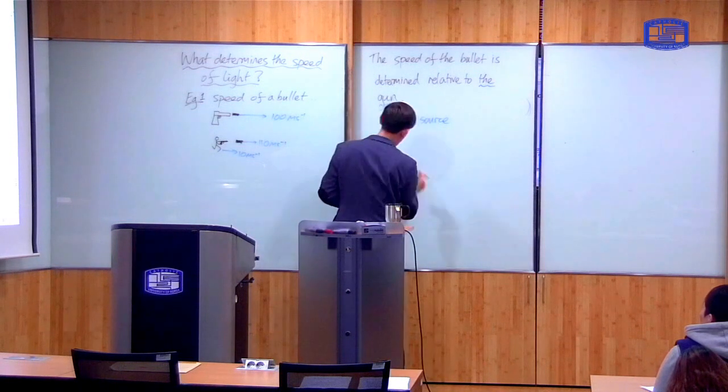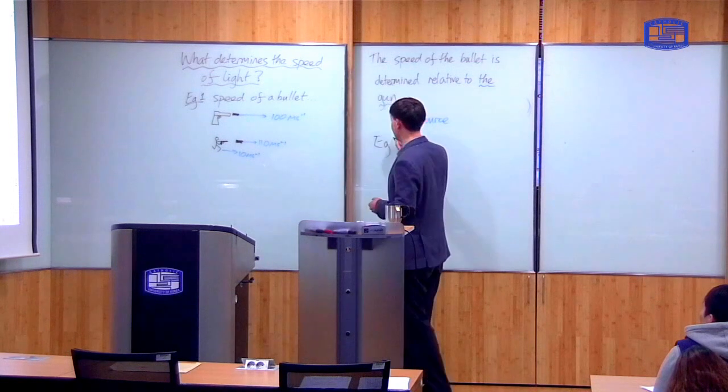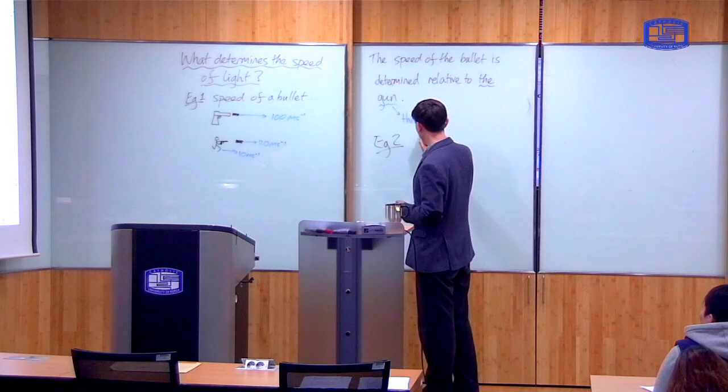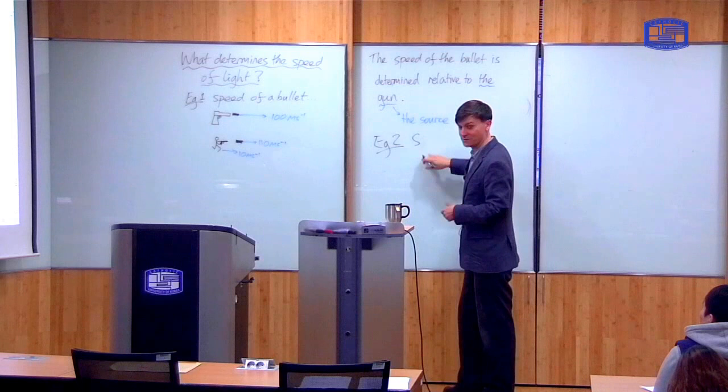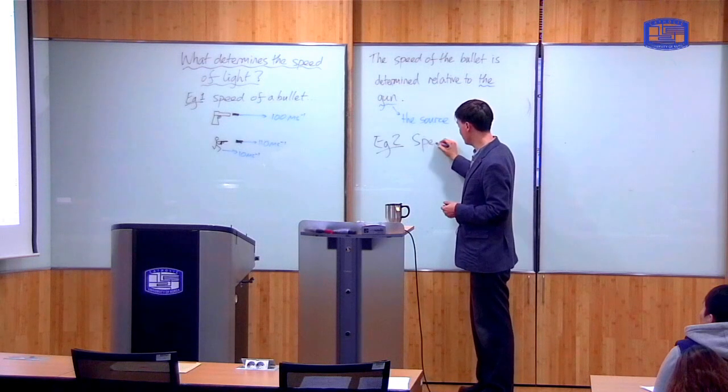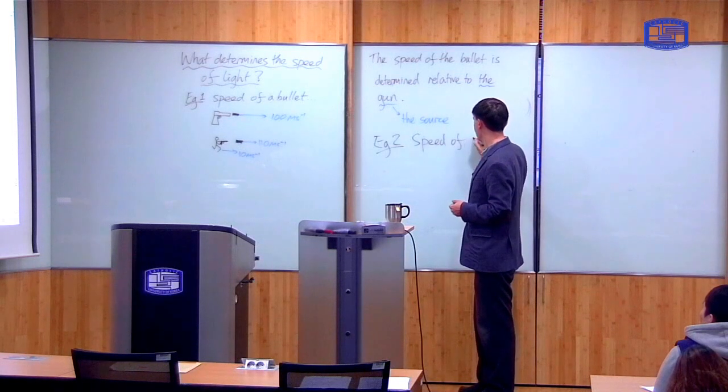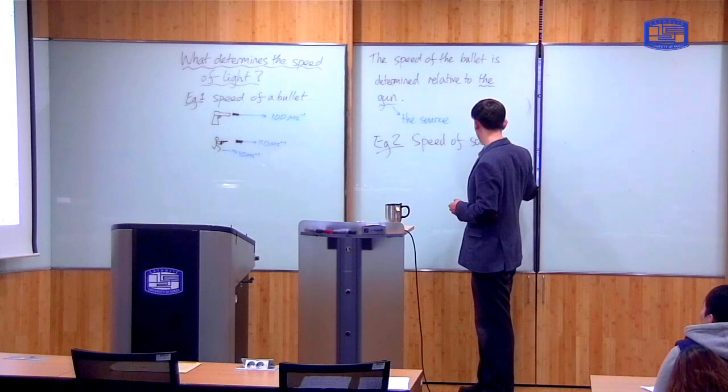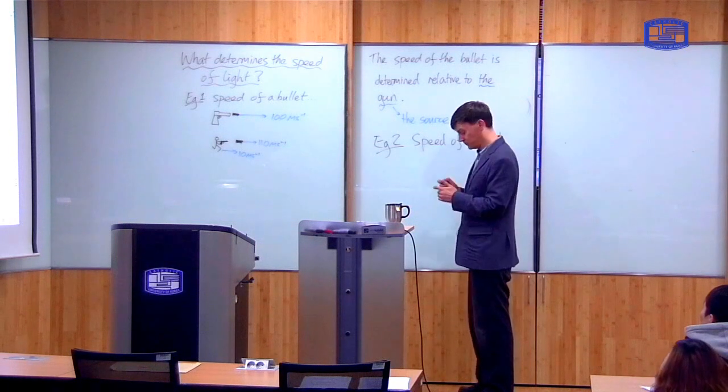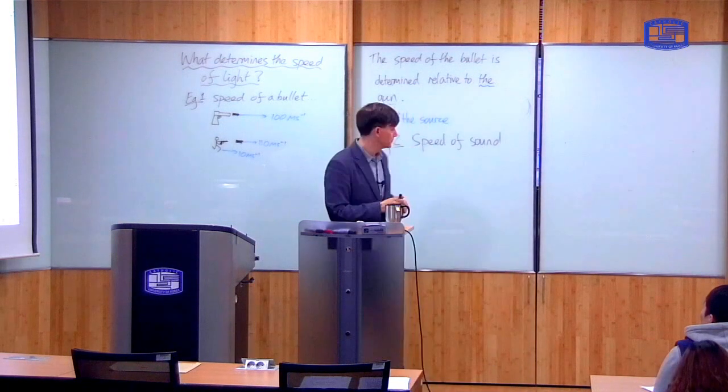That's one way in which a general speed can be determined. The speed of an object can be determined by the source of that object. In this case, the bullet and the gun. But that's not true of everything. A second example is the speed of sound.